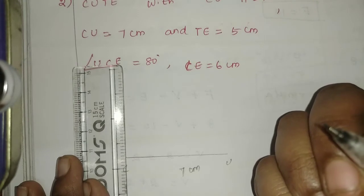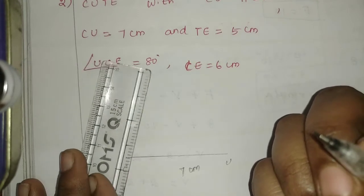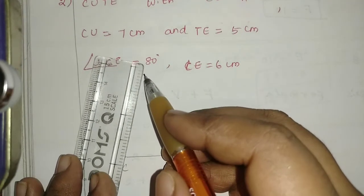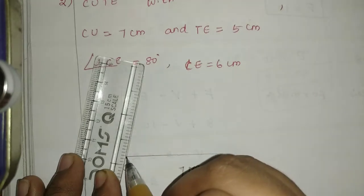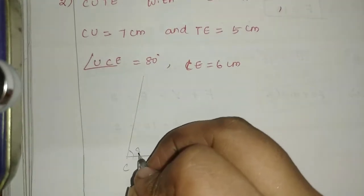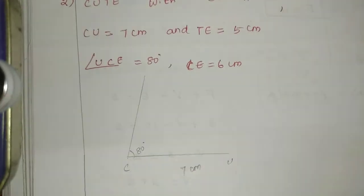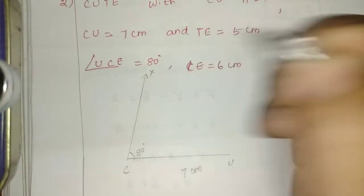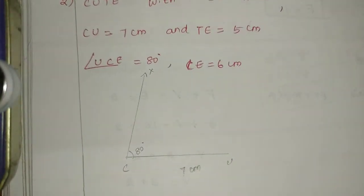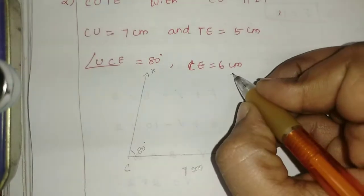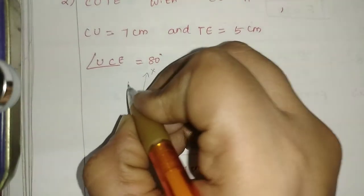The angle is equal to 80 degrees. I will put CU and then E on the rough diagram.